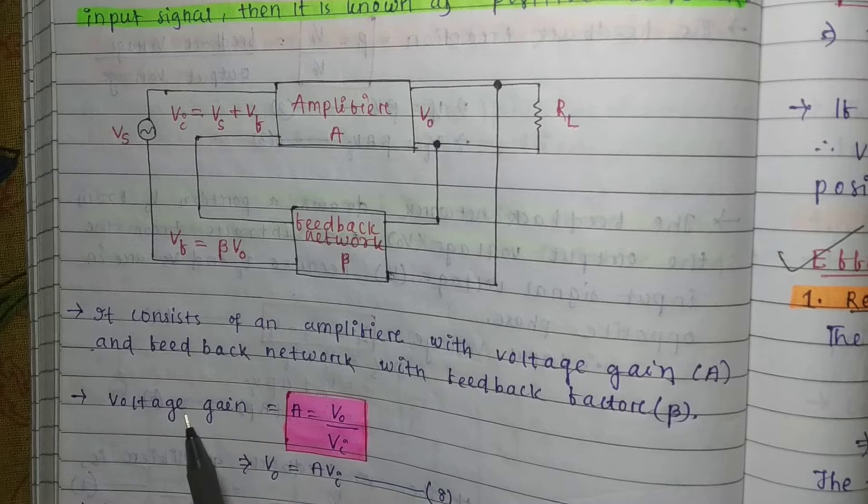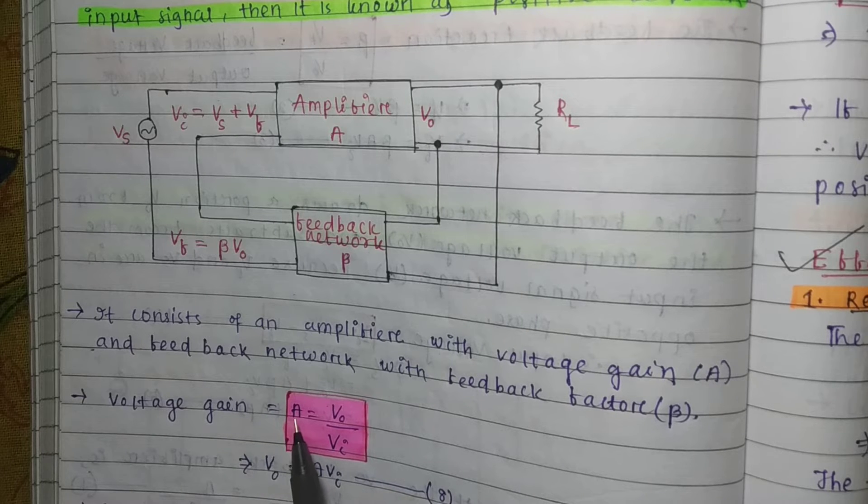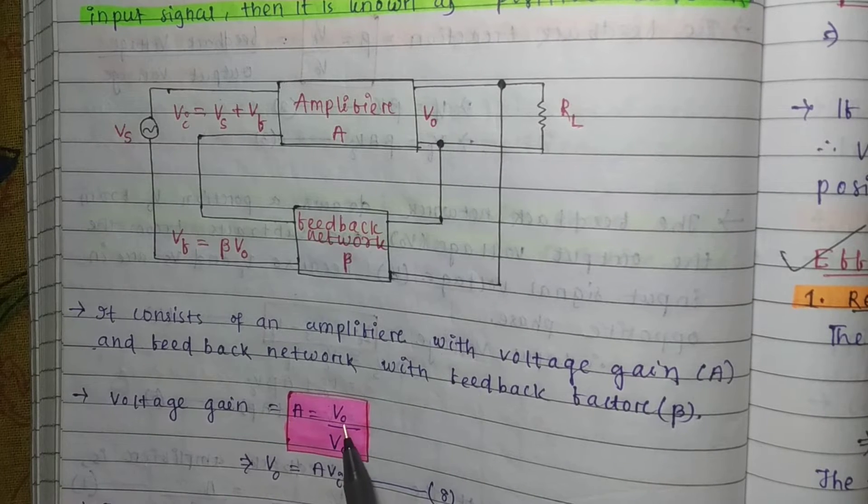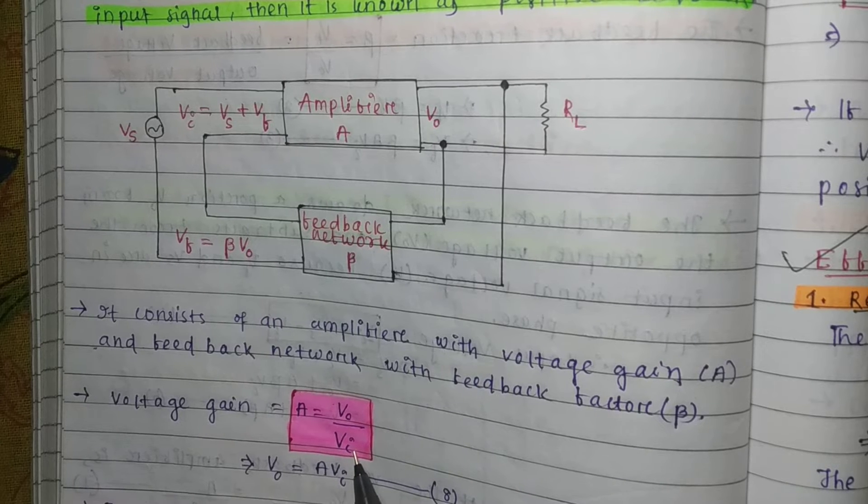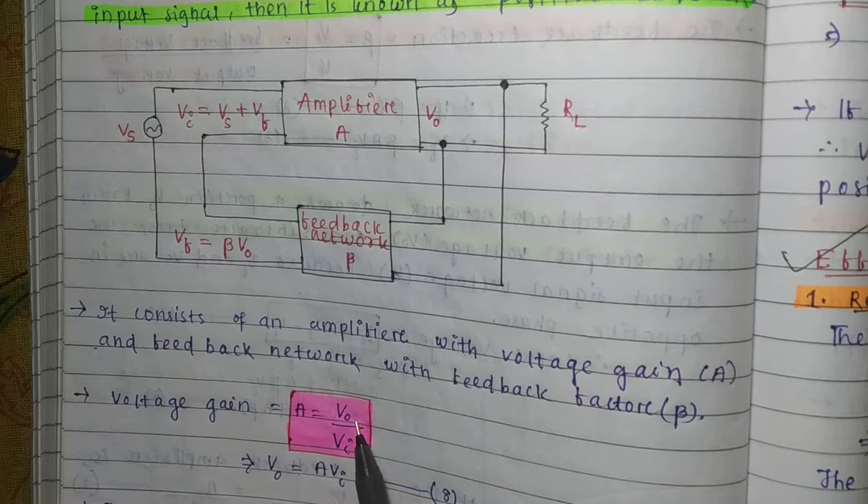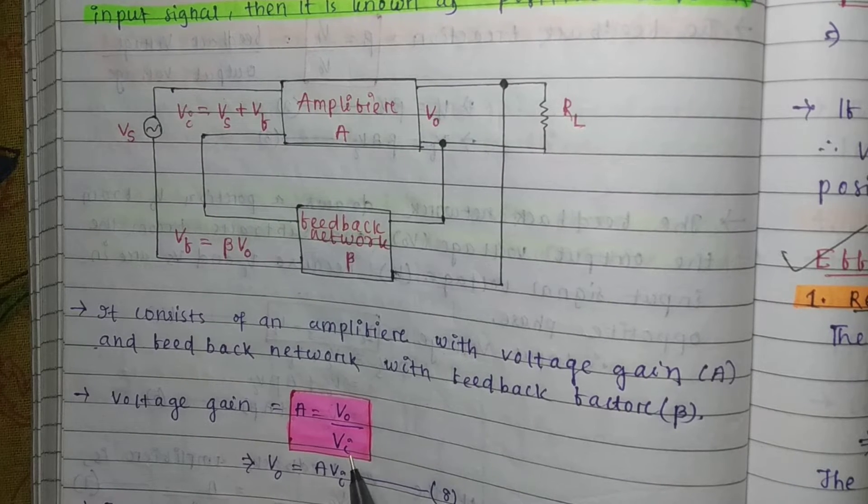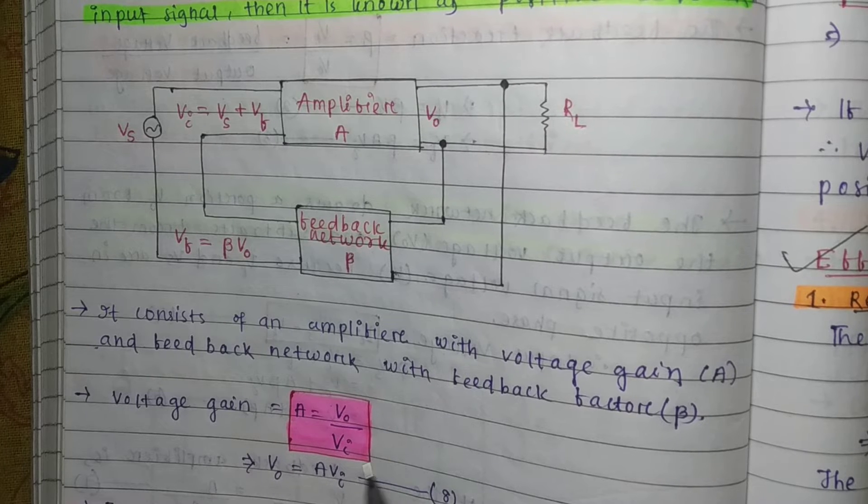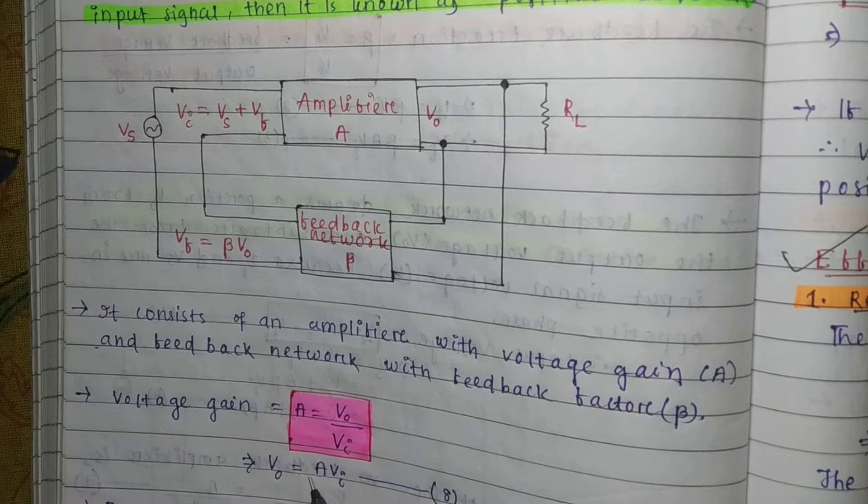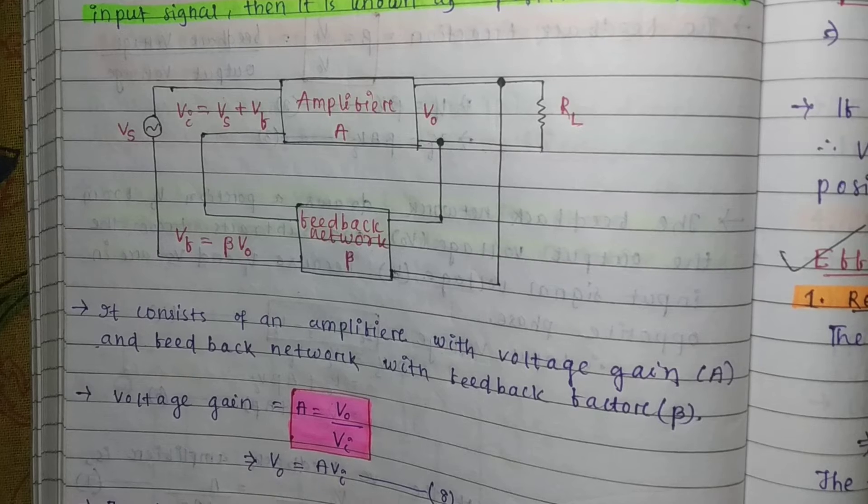As we know, voltage gain equals to A V O by V I. This is the output voltage, this is the input voltage. From this equation we get V output equals to A into V I.